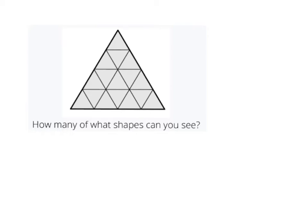The most obvious shape is triangles, but there are several different sizes. The first one that jumps out is the largest triangle, and that largest triangle is made out of one, two, three... sixteen smaller triangles. So I'm going to call this a sixteen-triangle, and there is one of them.